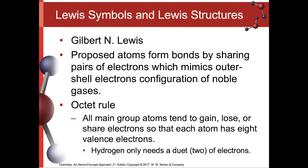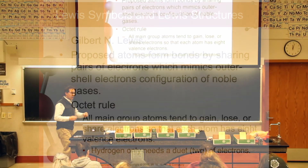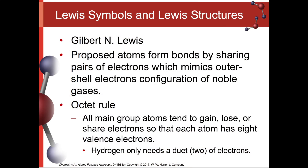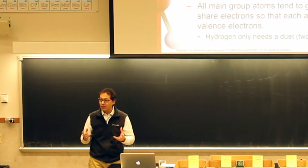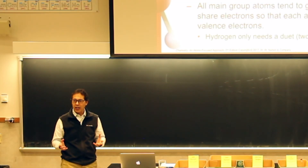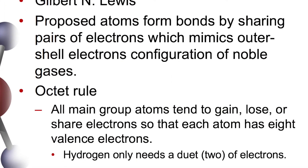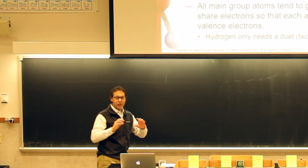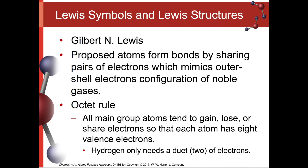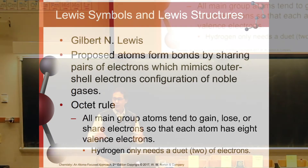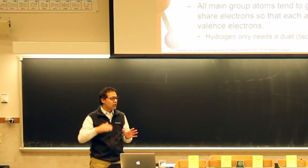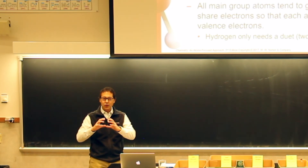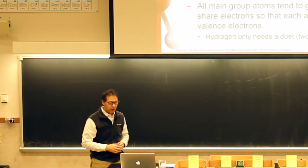Gilbert Lewis is one of these famous scientists, and one of his contributions is he proposed a way of drawing atoms using pairs of electrons, showing that atoms gain or lose electrons to have a noble gas configuration — the octet rule. The octet rule tells us that all main group atoms, atoms outside of the D block, tend to gain, lose, or share electrons so that each atom has eight valence electrons. There are exceptions, such as hydrogen, which is in the first energy level and only has space for two valence electrons.